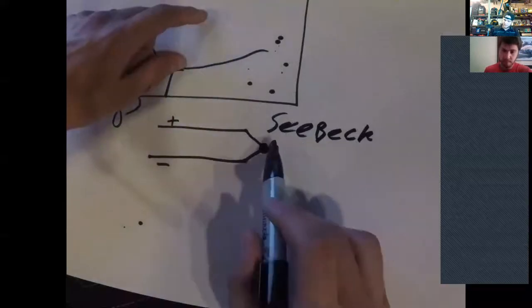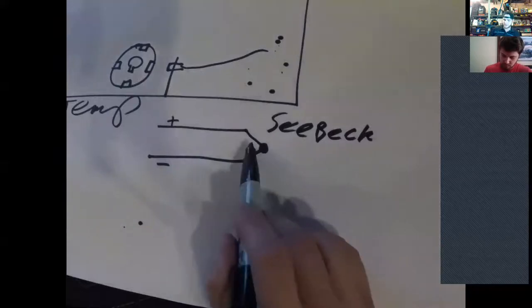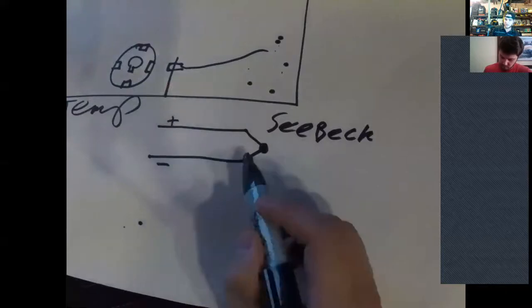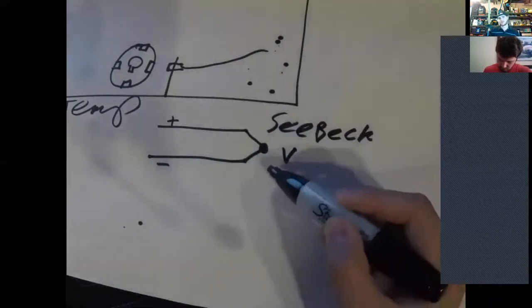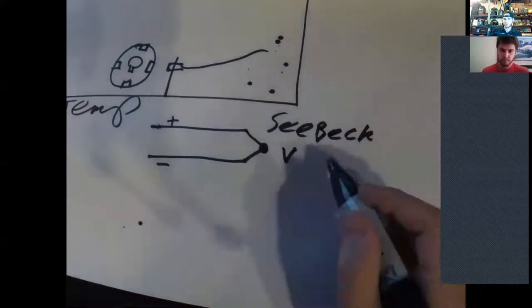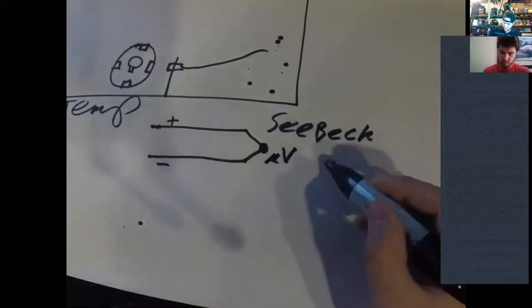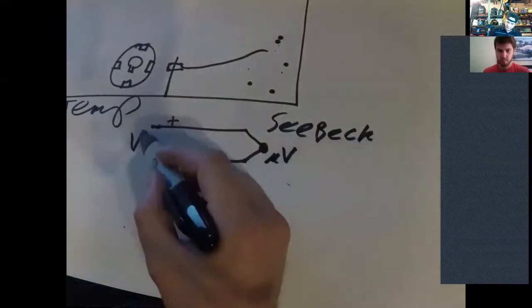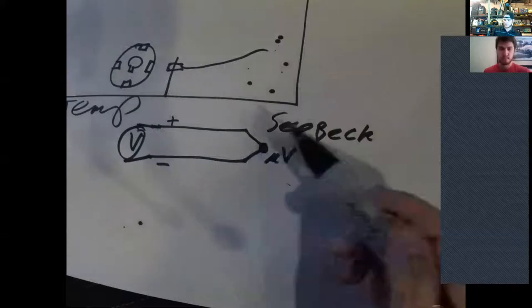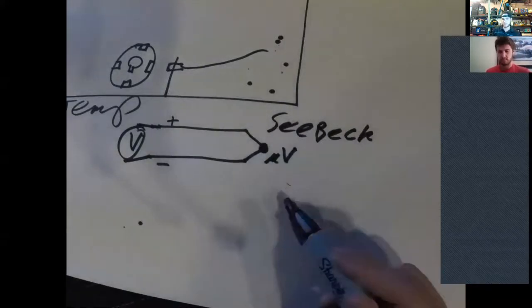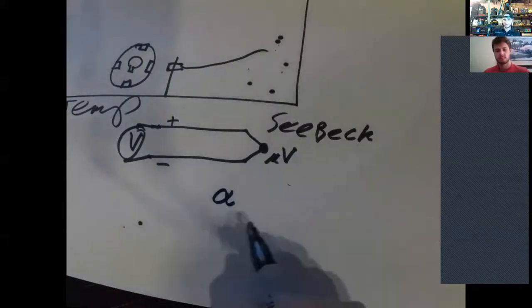So the Seebeck effect, essentially if you have two dissimilar metals like this joined together at different temperatures, this induces a voltage across this junction. So it basically creates voltage and it's usually really small. I mean, I think maximum you can get is like a couple volts out of this.